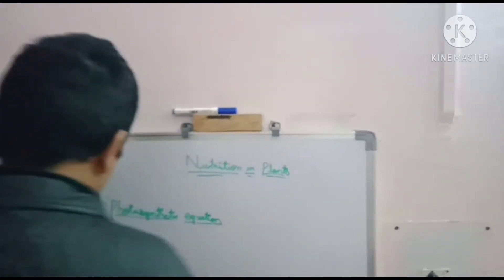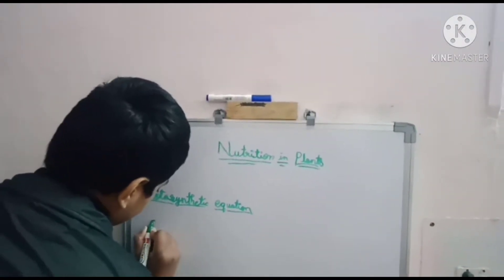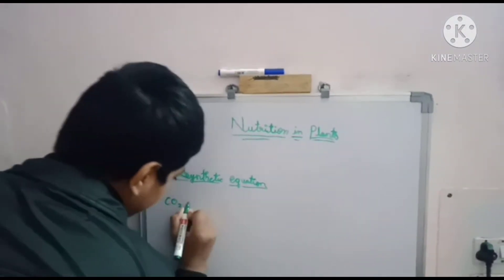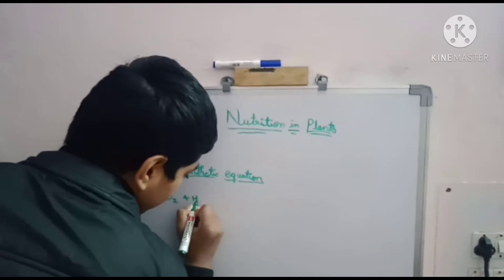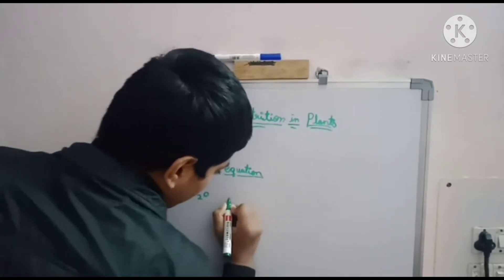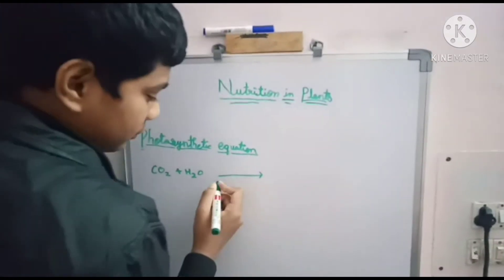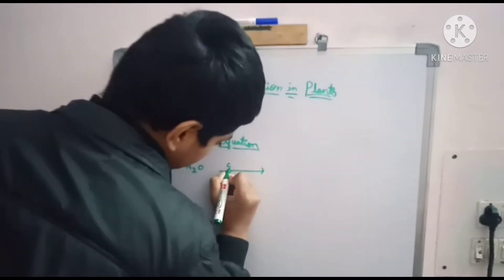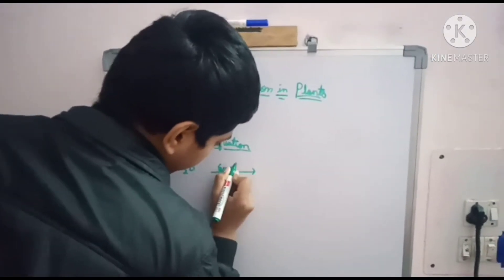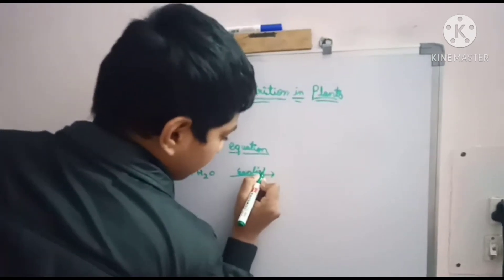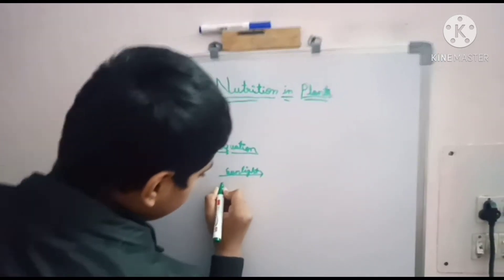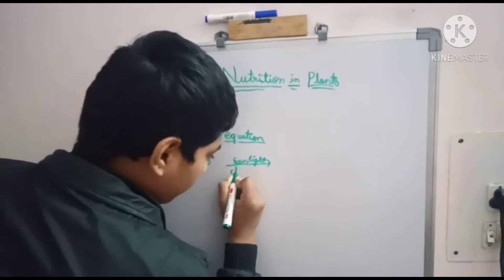Hi guys, welcome back to my channel. We are discussing balancing the photosynthetic equation. The photosynthetic equation is: CO2 plus H2O, with sunlight above the arrow and chlorophyll below the arrow, gives rise to the products.